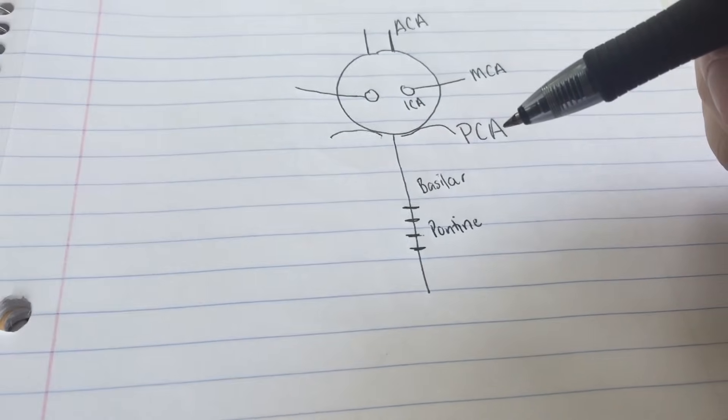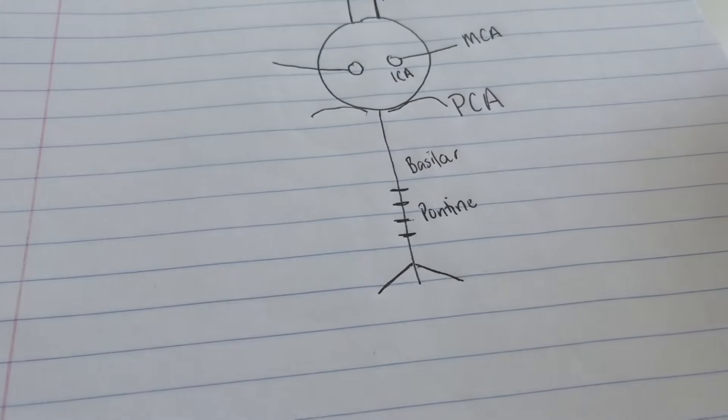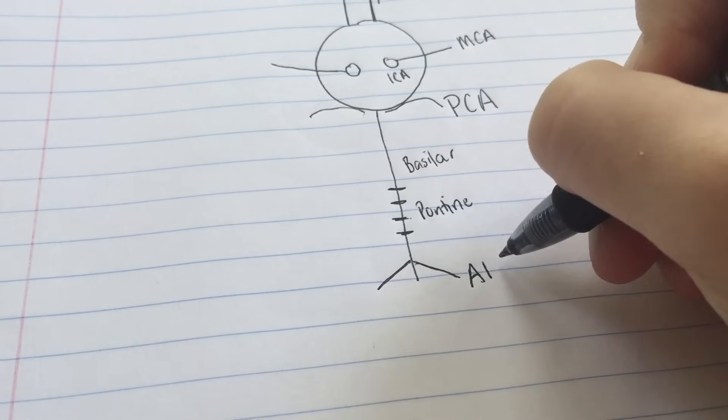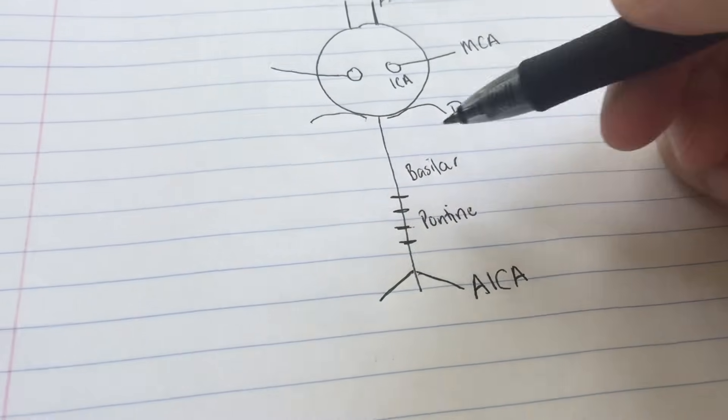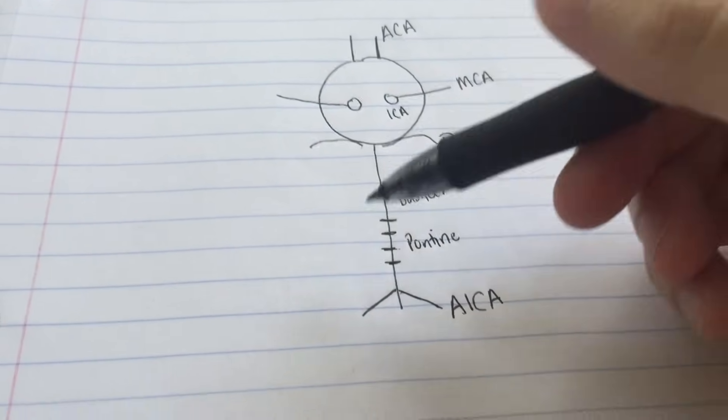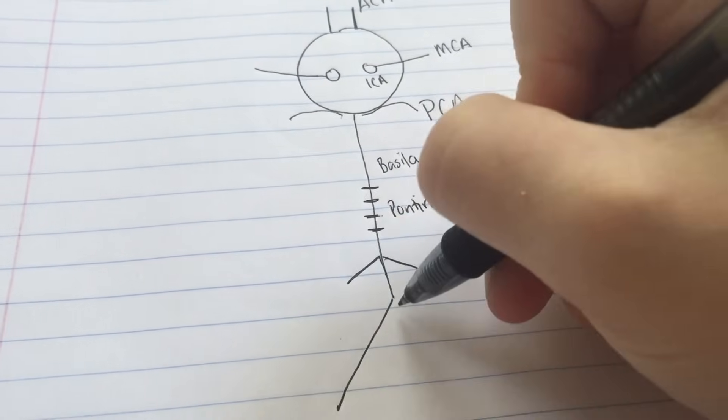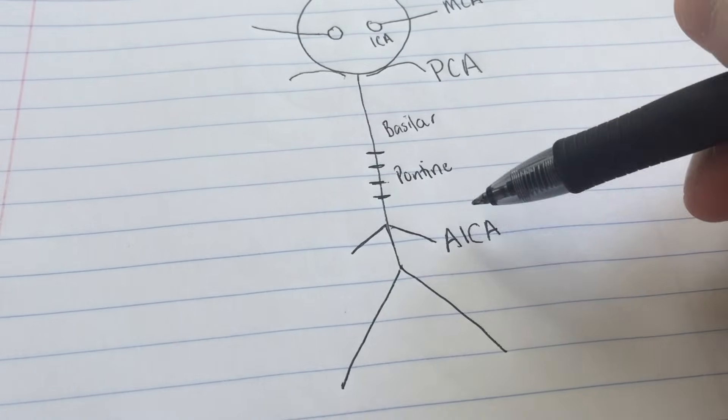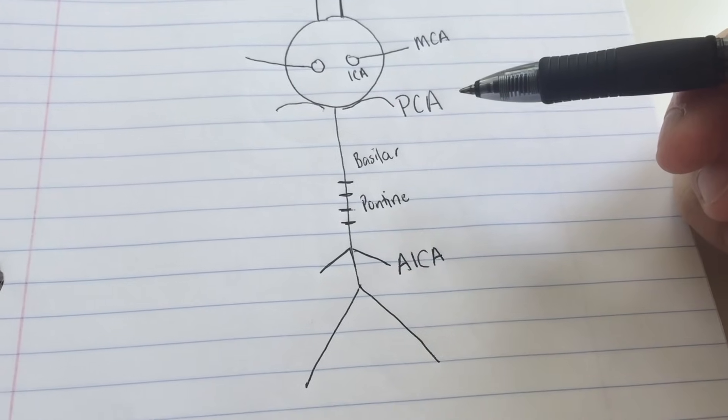Now the next thing we do is we draw two arteries coming off the basilar. And these are the anterior inferior cerebellar arteries or the AICAs. And on our stick figure if he was to have low back pain it would occur right here in his low back. And in his low back he'd have a low back ache or a low back AICA. So the AICAs correspond to the region on the stick figure where you might expect to find low back pain.